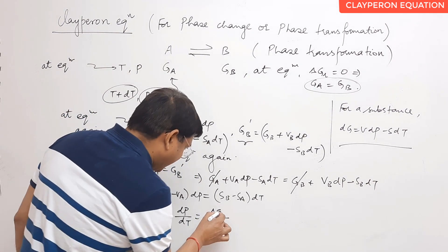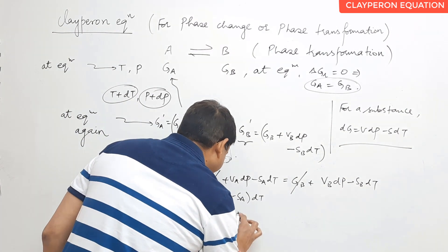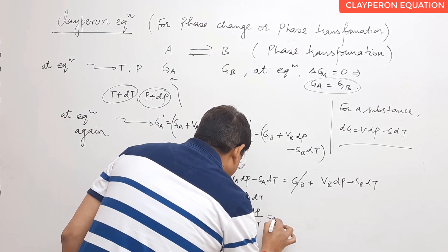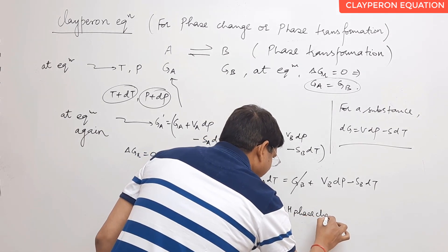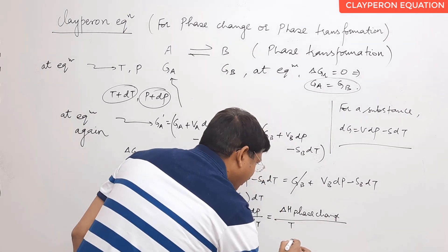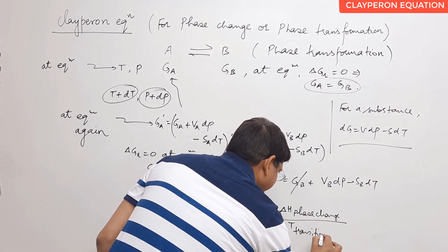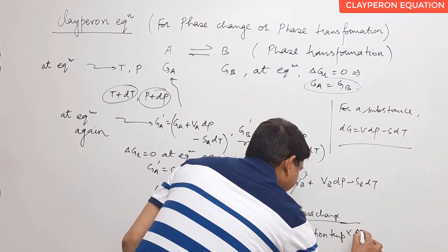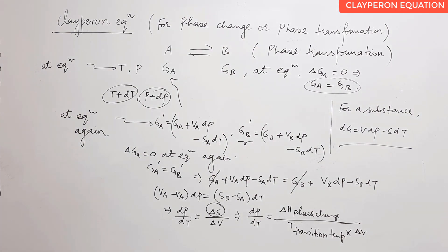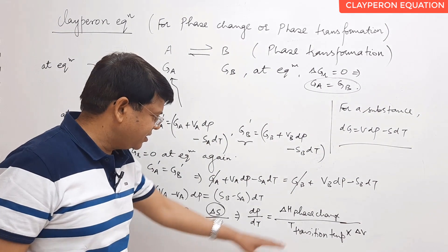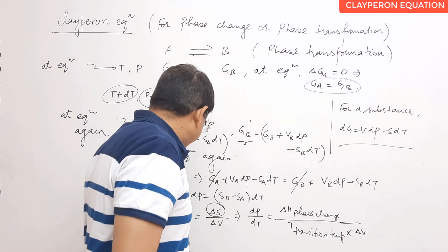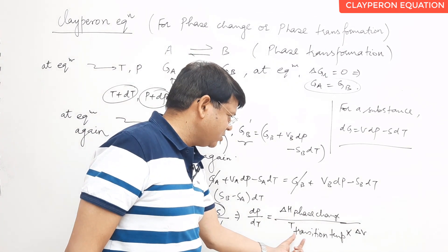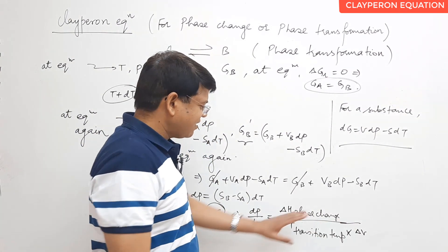Since this is the entropy change of the phase change, and from thermodynamics we know that ΔS = ΔH / T (where T is the transition temperature in Kelvin), we can write: dP/dT = ΔH_phase change / (T · ΔV). This is the Clapeyron equation for phase change.